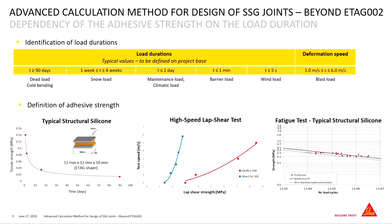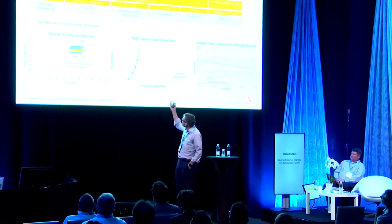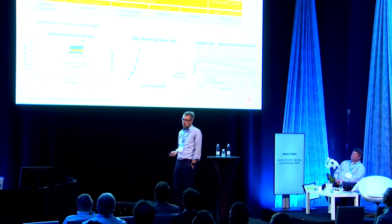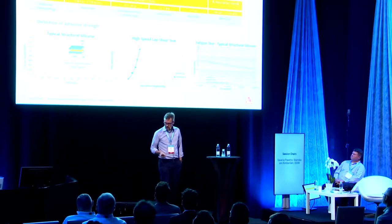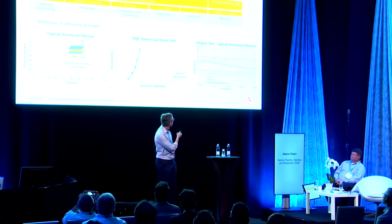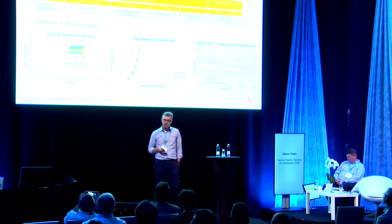Just three examples, three different diagrams, showing how the material — the adhesive itself — behaves differently depending on loading and load duration. The first picture shows the behavior of a typical structural silicone when you put different forces under different time loads. Then high-speed testing up to several meters per second, which might be important for blast events. And then the same thing for fatigue — I think this is also a kind of underestimated topic.